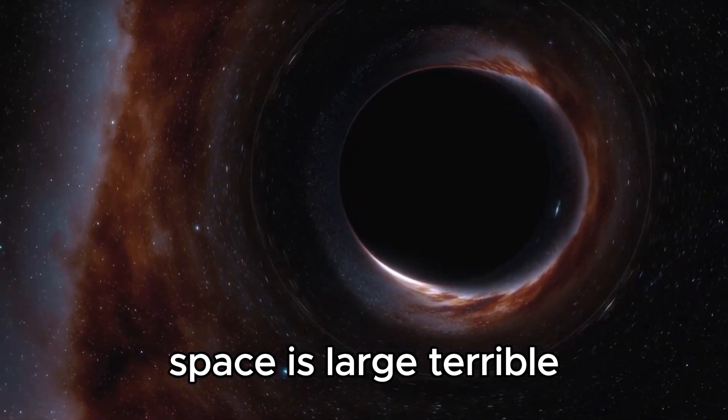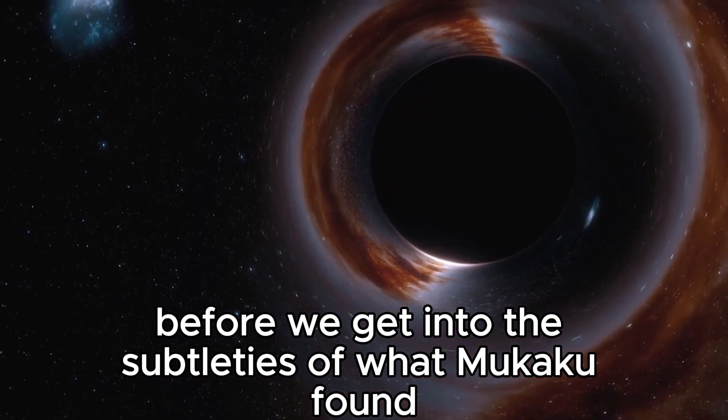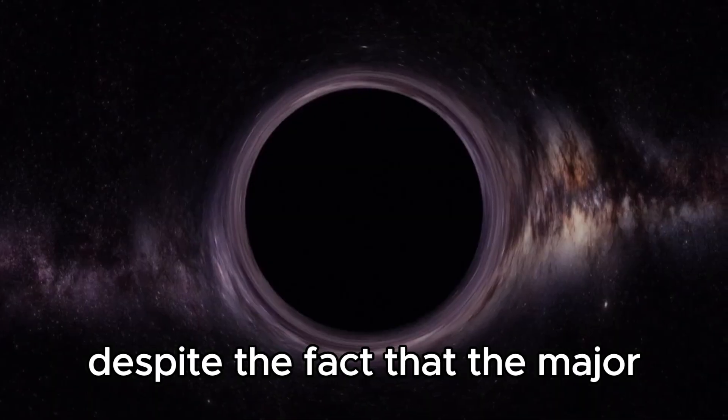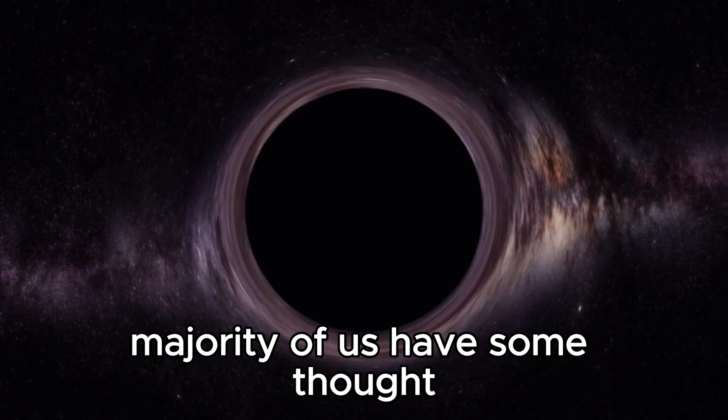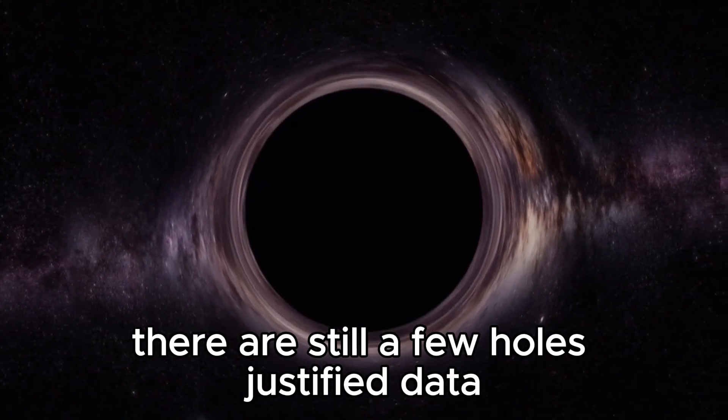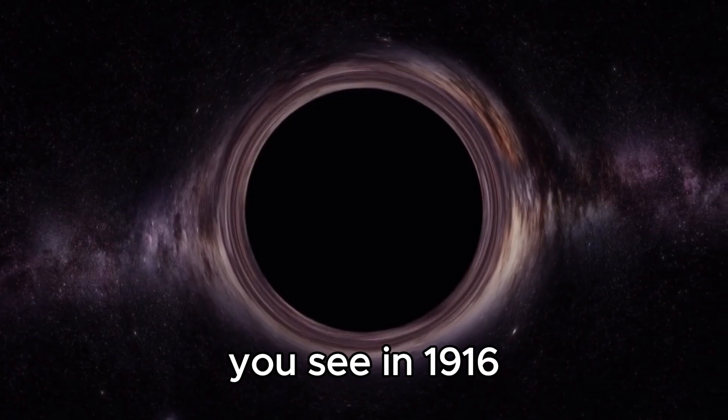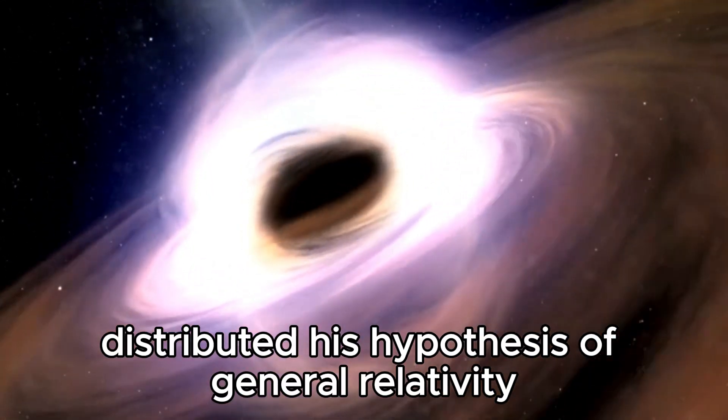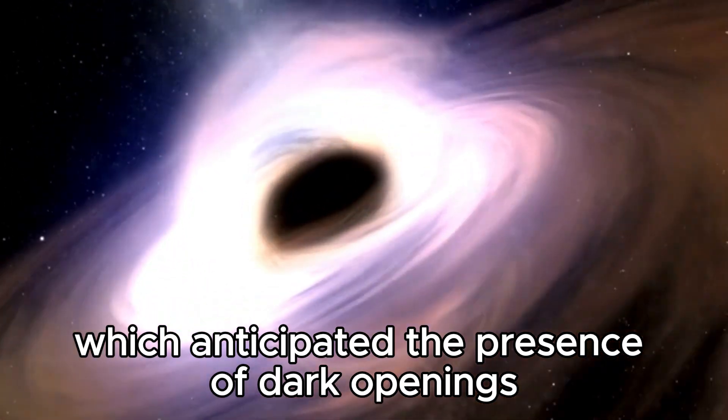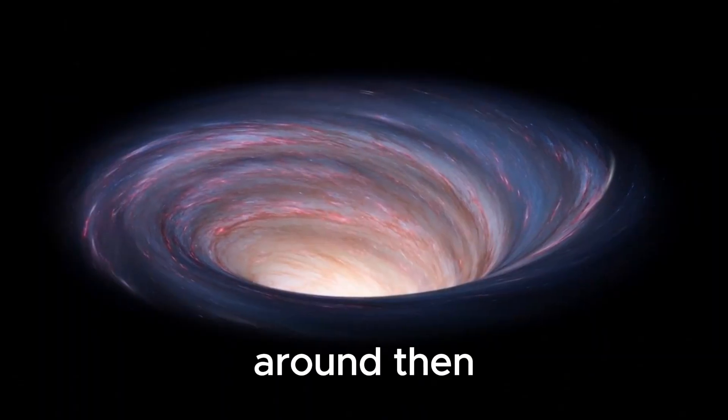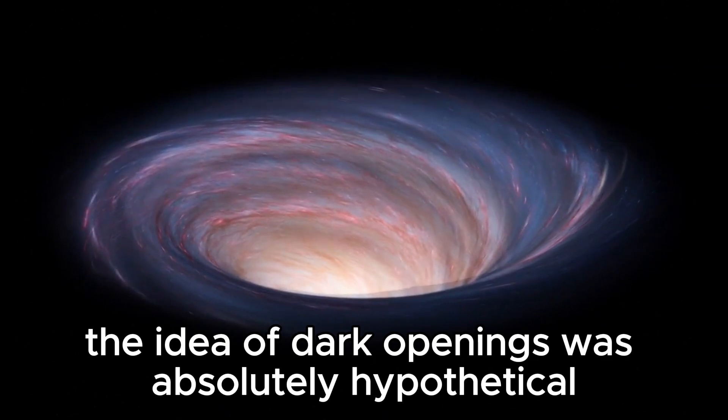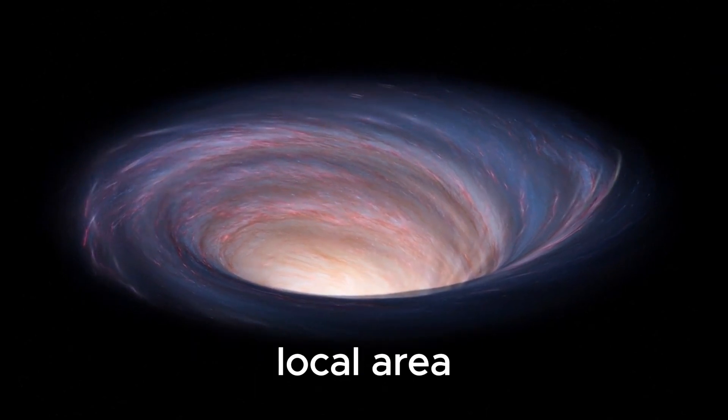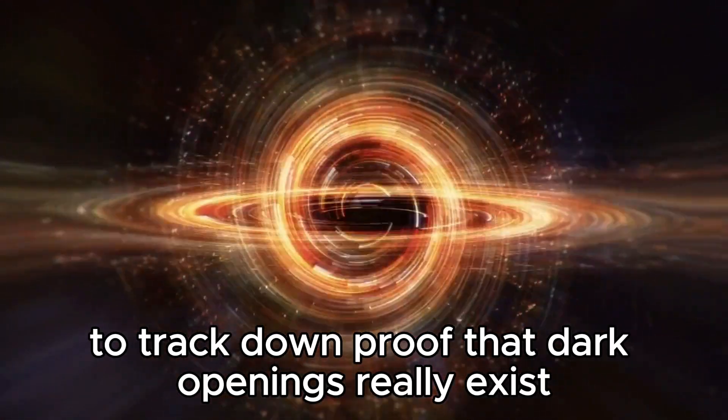Before we get into the details of what NASA found, we need to discuss the principles. In 1916, Albert Einstein published his theory of general relativity which predicted the existence of black holes. Back then, the idea of black holes was absolutely hypothetical. It required an additional 50 years for the scientific community to track down evidence that black holes really exist.